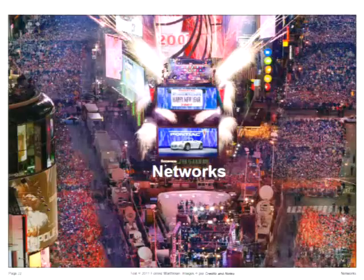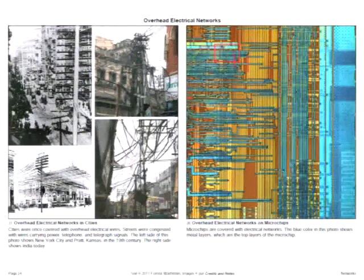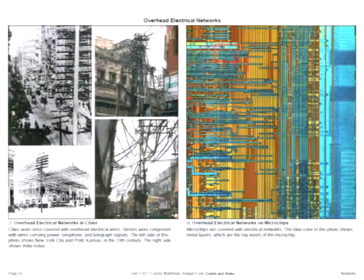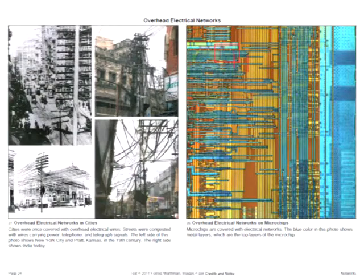Networks are key to both cities and computers. The image on the right shows blue metal traces connecting transistors. But cities themselves used to be overlaid with electrical networks. The image in the top left corner is Manhattan in the 19th century — electrical wires overhead, lots of them: power, telephone, telex. Below that is an image from Pratt, Kansas around 1900, where the downtown is covered with an electrical network. Even today in India, you will find streets covered with electrical wires.